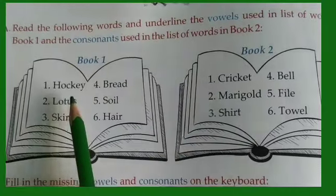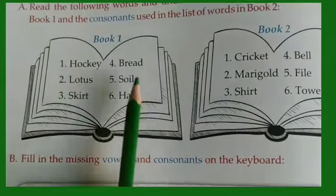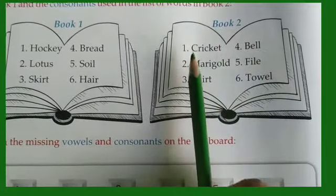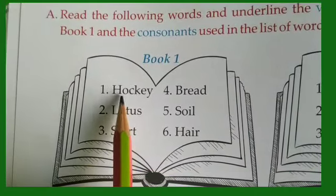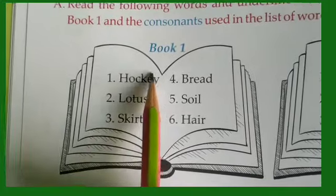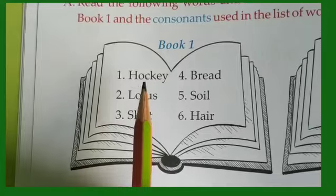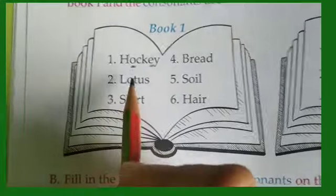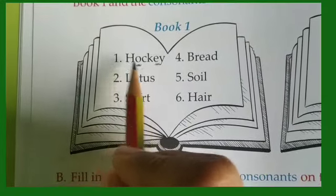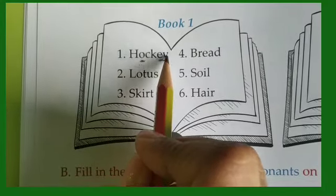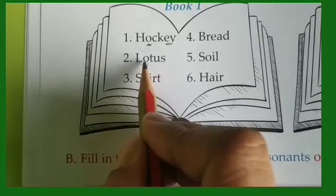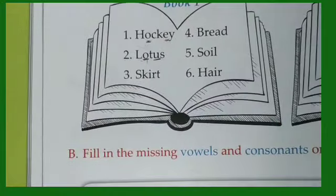So there are two books — Book 1 and Book 2. In Book 1, underline the vowels, and in Book 2, underline the consonants. The first word is hockey — where do you find vowels? We will underline O and E. H, C, K, Y are consonants. Next one is lotus — the vowels are O and U, rest are consonants.